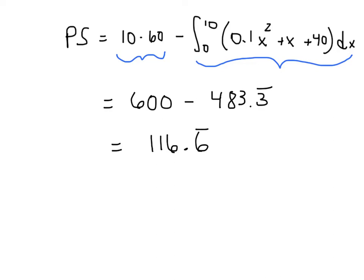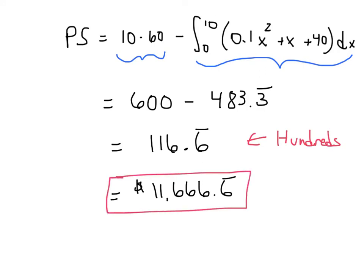But again, remember, this is in hundreds. So we're going to multiply by 100. That shifts the decimal over. And so our actual value for the producer surplus is 11,666.6 repeating. Or if you want to round that off to 67, that's fine if it asks for the nearest dollar, which I'm sure it probably did.